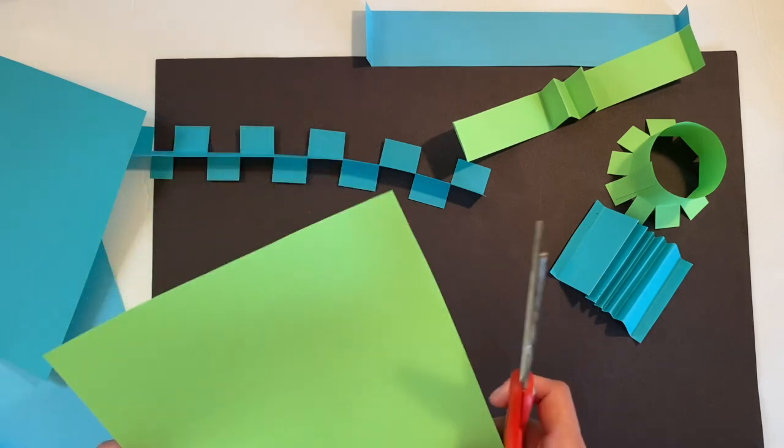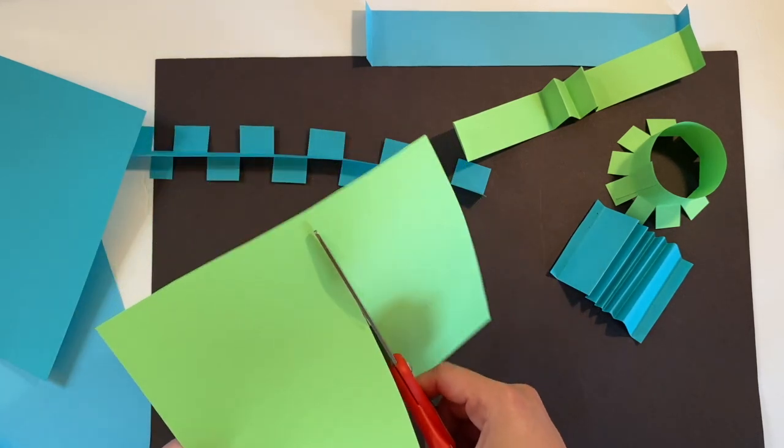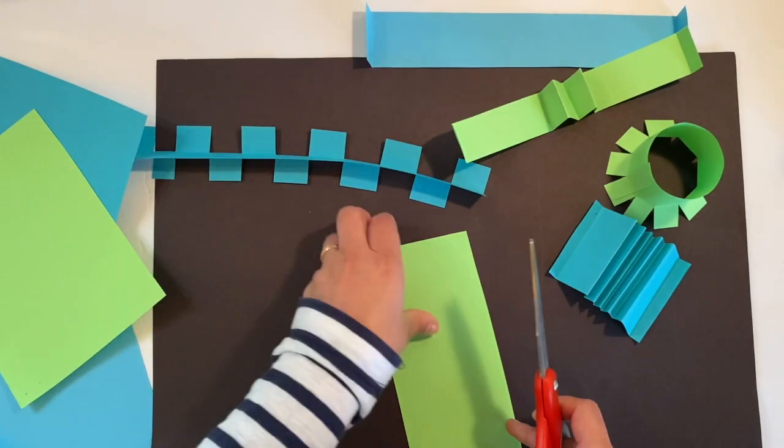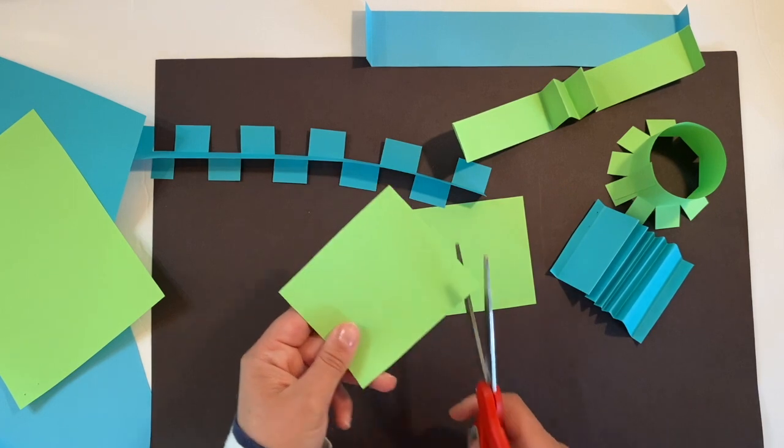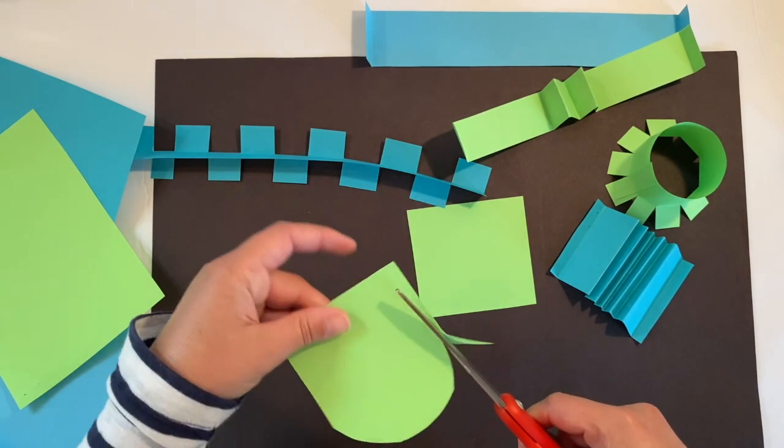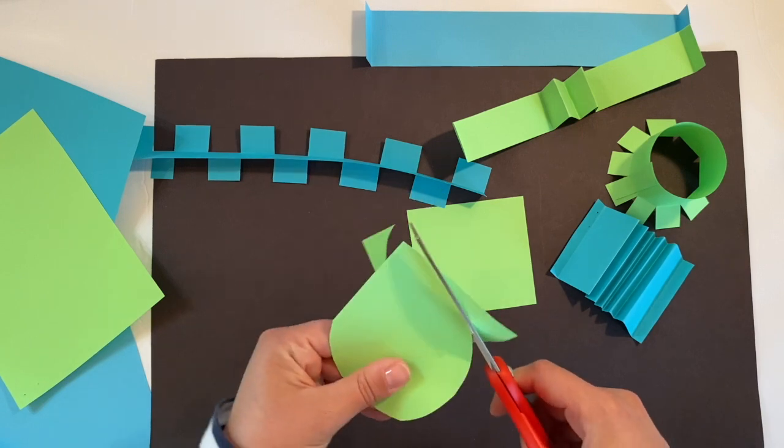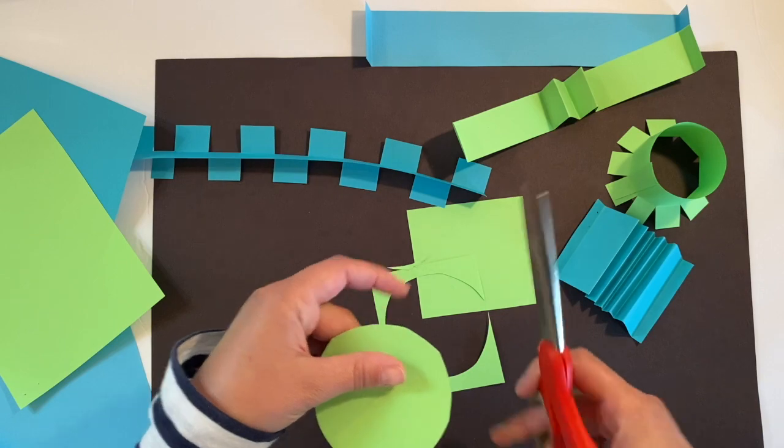Now the next one, I need you to cut a square. Go ahead and cut a big fat rectangle and then just divide it into two parts to make a square. This one is going to be the cone.